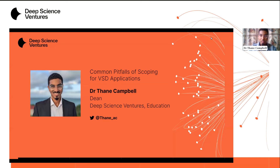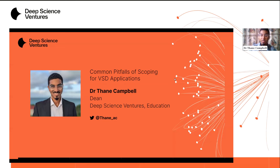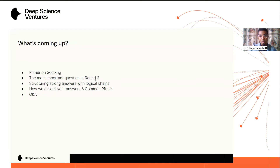Round two is where you actually have to do some thinking and use our scoping methodology — the method we've developed at Deep Science Ventures to focus on outcomes and to systematically explore the best approaches, technologies, and companies to build to unlock those outcomes. We're going to spend about 15 minutes on this first part, then please do send your questions into the chat and I'll be answering those for you.